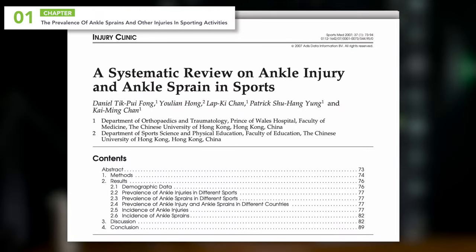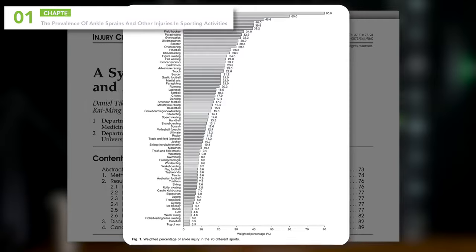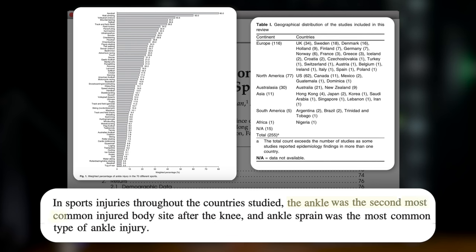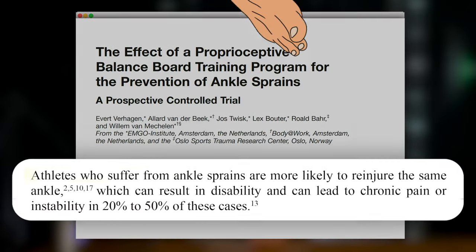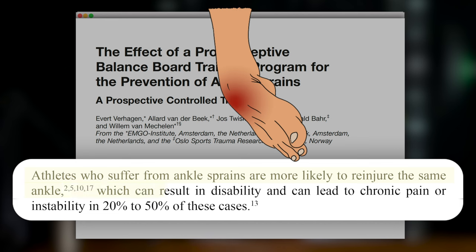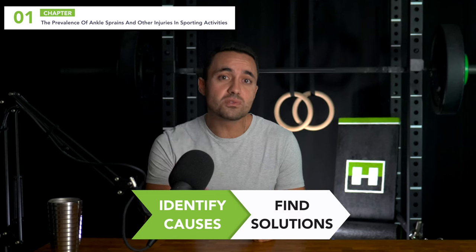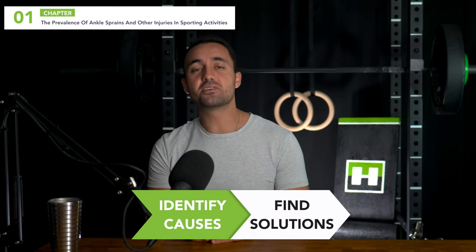A literature review of 227 studies across 70 different sports in 38 countries found the ankle joint to be the second most common injury site after the knee, and the ankle sprain to be the most common type of ankle injury. It has also been found that once an ankle sprain occurs it is more likely to reoccur, and that 20 to 50 percent of sufferers will end up with functional ankle instability — which is just a fancy way of saying weak and unreliable ankles for athletic activities. Now to tackle this problem effectively we have to first identify the common causes of ankle sprains and then find the solutions to them.